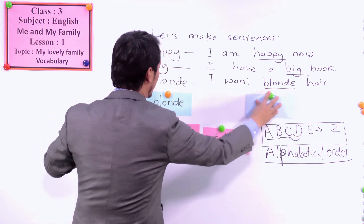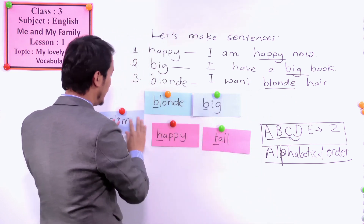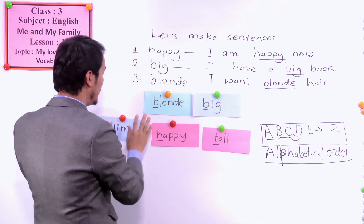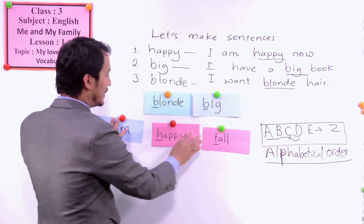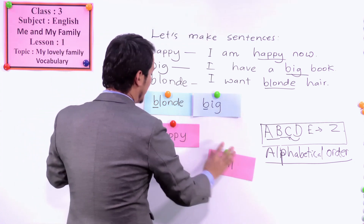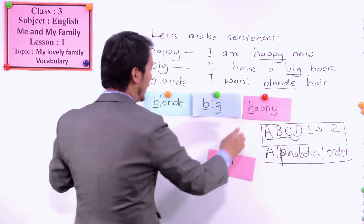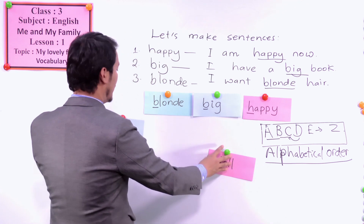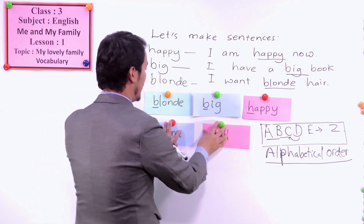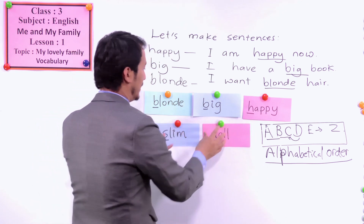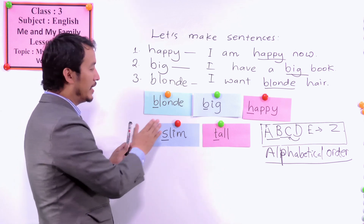We will see later which B comes first. After B, there is H, and then comes S, and then only T. So this is how we make order.